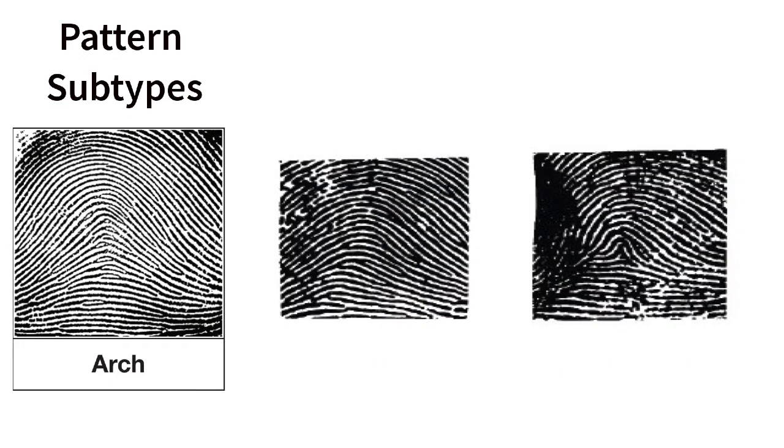Arches can be distinguished as a plain arch or a tented arch. Plain arches have gentle ridges, whereas tented arches have steep ridges forming triangles near the middle of the print.